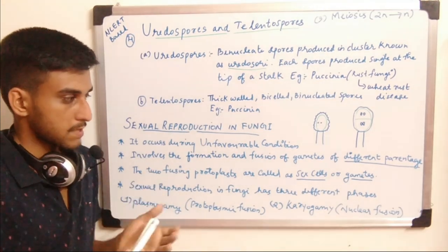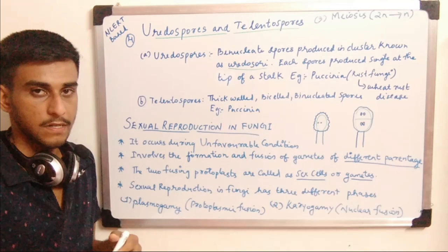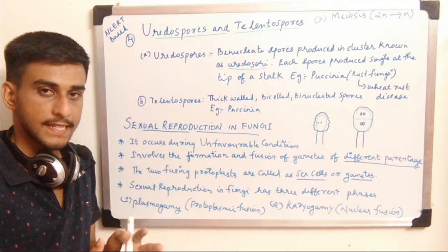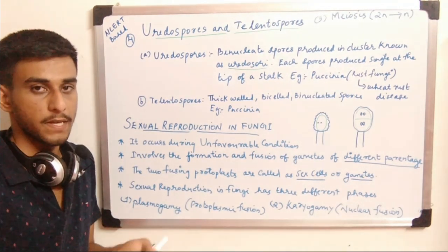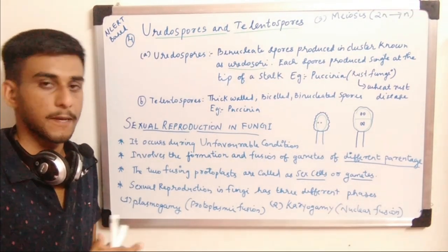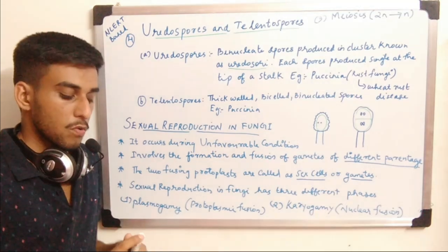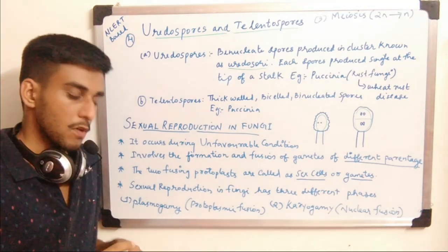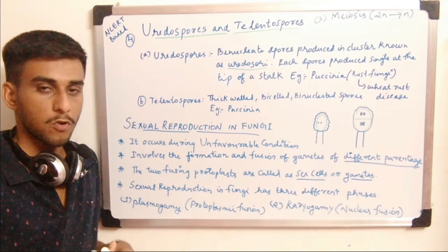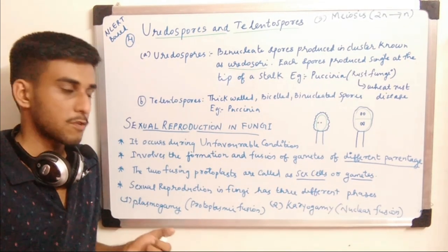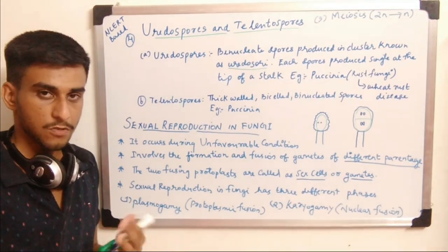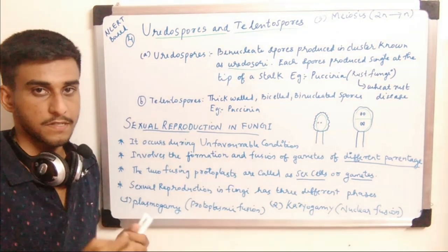The two fusing protoplasts are known as sex cells or gametes. Protoplast is the entire cell entity including cytoplasm and nucleus. Protoplasm equals cytoplasm plus nucleus. Cytoplasm is the entire cell entity which does not include the nucleus. In sexual reproduction of fungi there are mainly three phases.